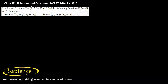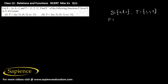Here it has been told that S is a set which contains elements a, b, c and T is a set which contains elements 1, 2, 3. We have to find f inverse of the following functions, where f is a function from S to T.